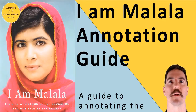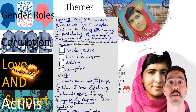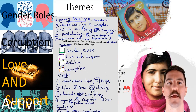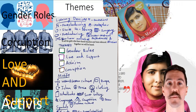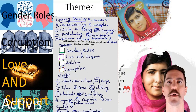This is your annotation guide for I Am Malala. I like to break annotation guides down into themes. I always choose four, so we can be consistent with four colors. The four themes are, according to me: gender roles, corruption, love and support, and activism.